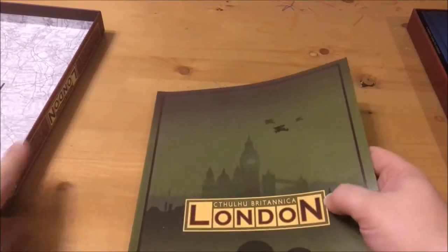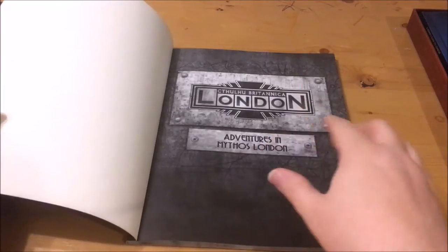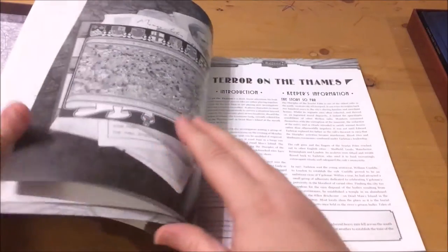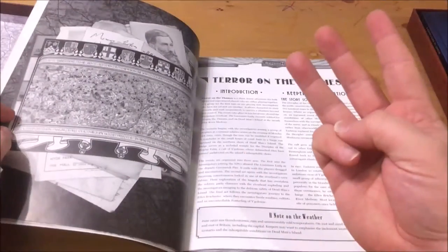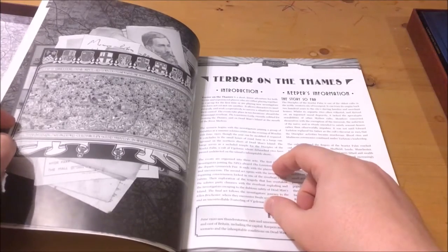Okay on to book three. Book three is entitled Adventures in Mythos London. There will be spoilers from this point on so stop here if you want to play this. This book contains three scenarios to give players a taste of what London has to offer.